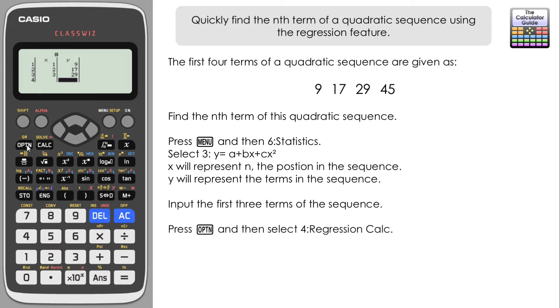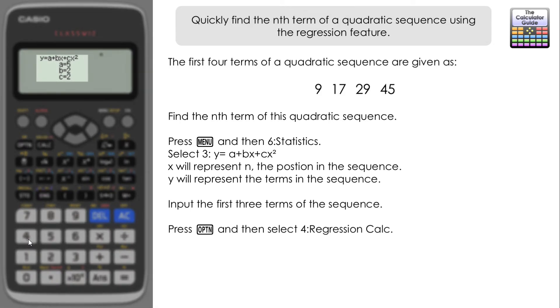Once they're submitted, you need to press option and then 4 for regression calculation, and you can see here that we've got a, b, and c values that we have, and that represents the coefficients that go in front of the three terms that we have.